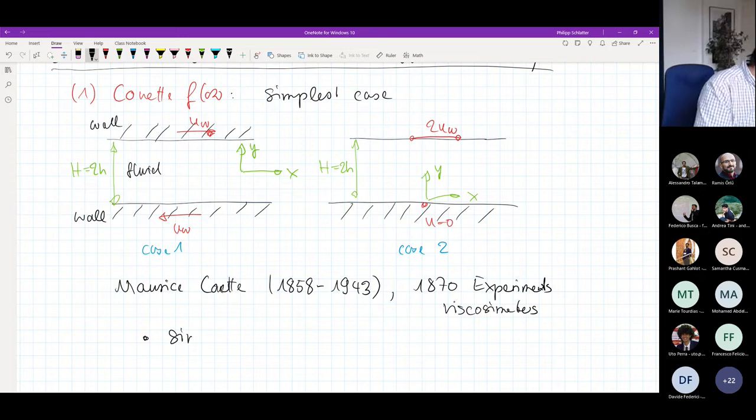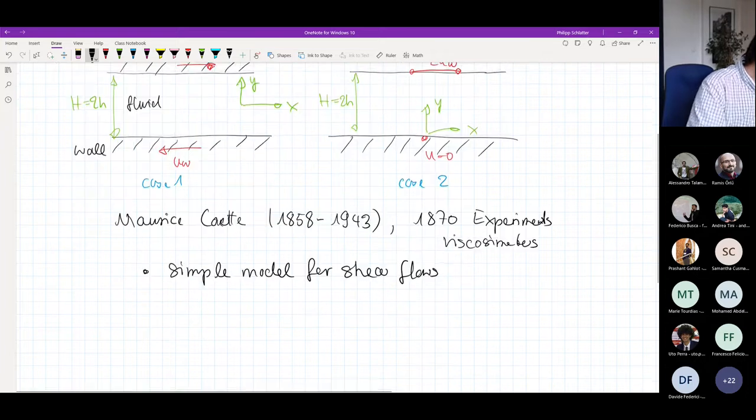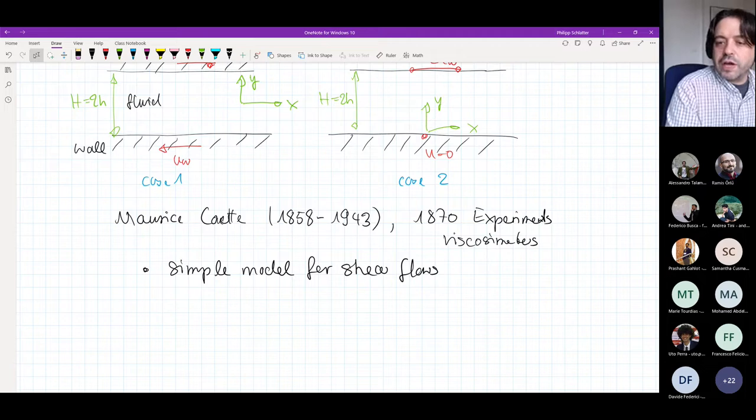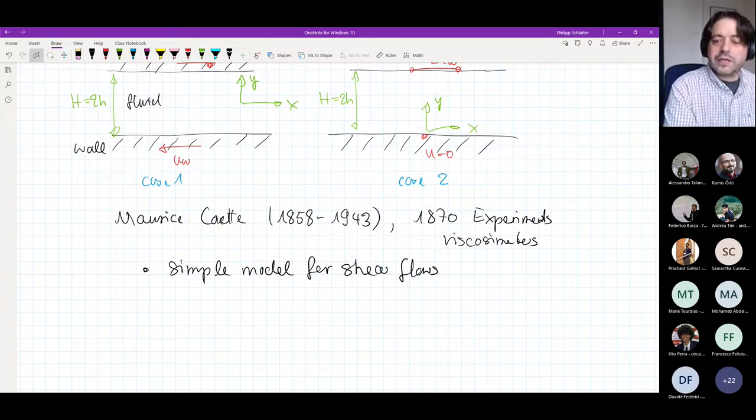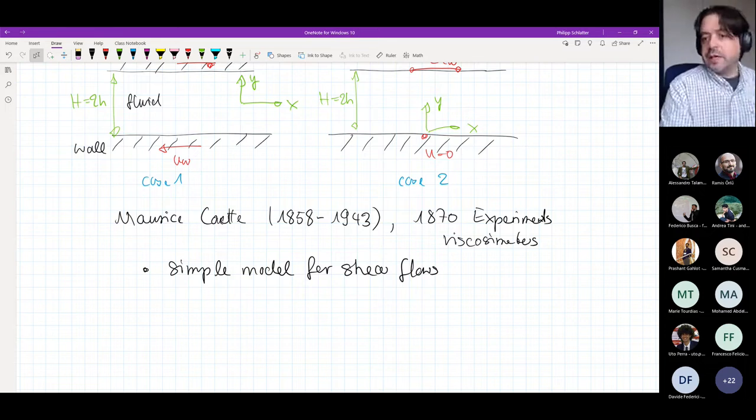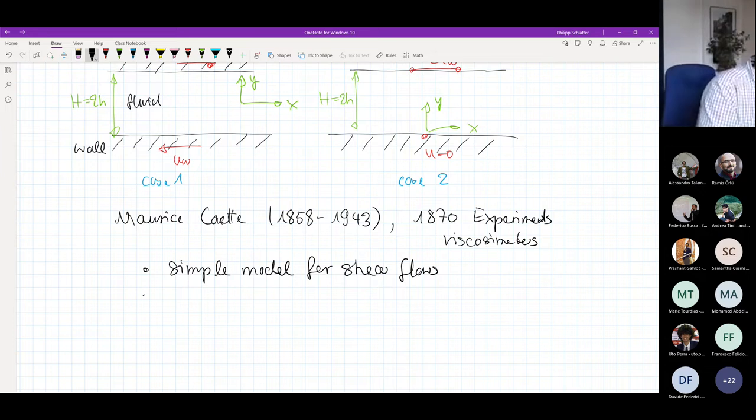Why is Couette flow important for us? It's actually a very simple model. It's kind of the simplest flow case, a simple model for shear flows. All the shear flows, if you just zoom in sufficiently much, will essentially become a Couette flow at some point. Therefore, you can say Couette flow is also relevant for astrophysical flows, for example, inside the sun when you have different layers rotating at different speeds. At some point, it will all look like a kind of this canonical shear flow.